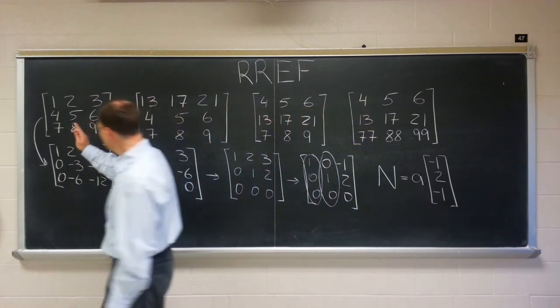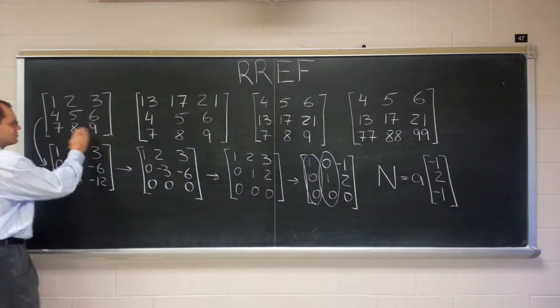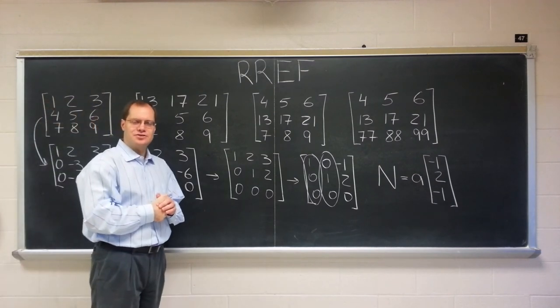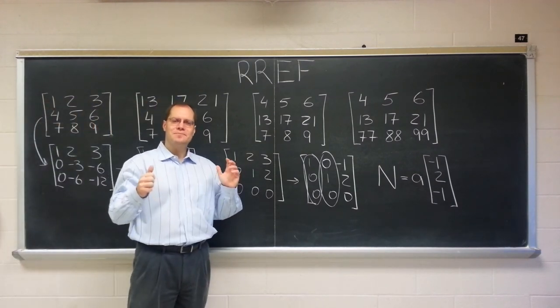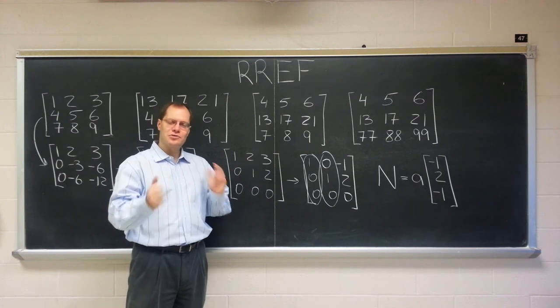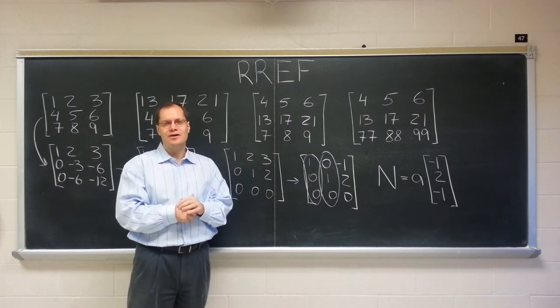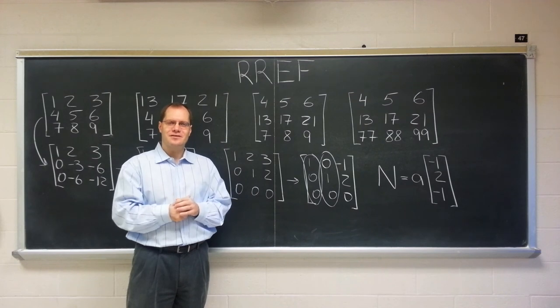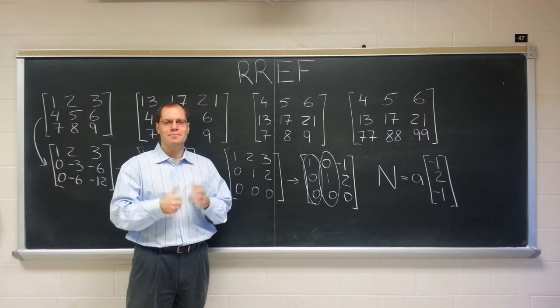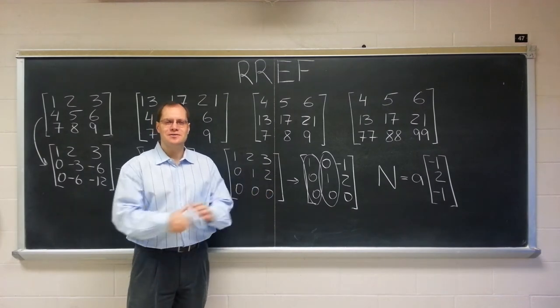This is the null space for a matrix whose middle entry is the average, I should be pointing here, whose middle column is the average of the other two. Now, let me pause the video, erase the board,